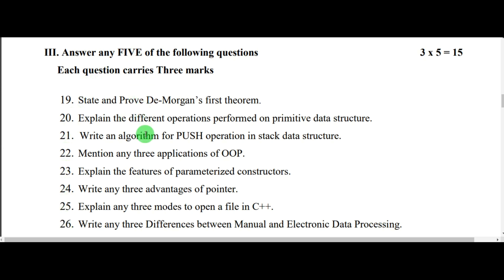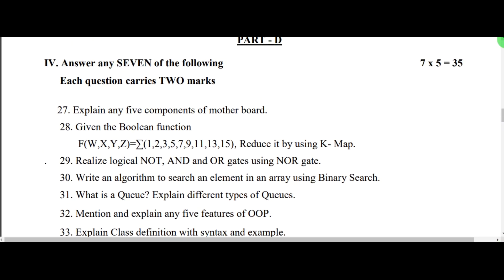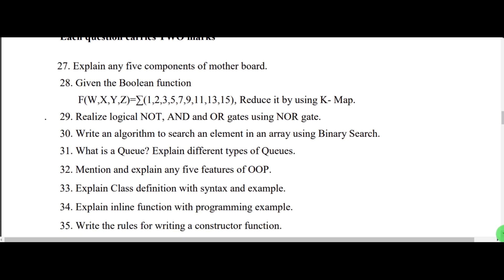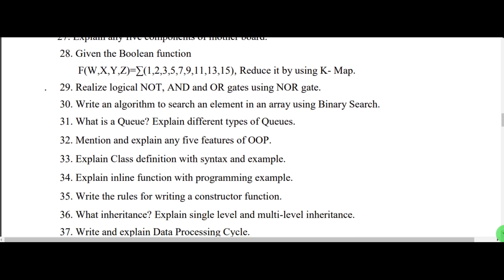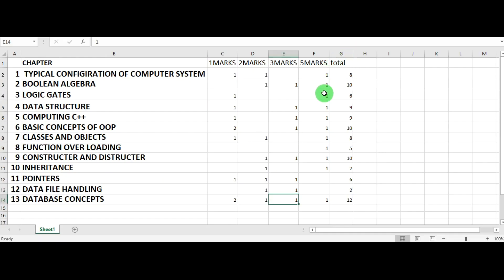In part D, you need to answer any seven out of eleven questions. So here it is: explain any five components of the motherboard, from chapter one. Then boolean function using K-map, from boolean algebra. Next, reduce logic gates — NOT, AND, and OR gates using NOR gate — from the logic gates chapter. You can see questions from configuration, boolean algebra, logic gates, and data structure covering all chapters.